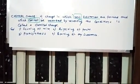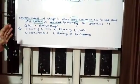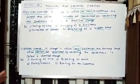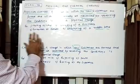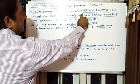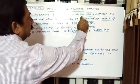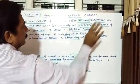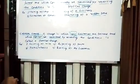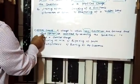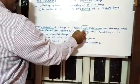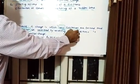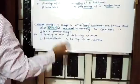If you go through the definitions carefully, you will come to know that in physical changes there are no new substances, whereas in chemical changes there are always new substances. In chemical changes, you will always get new substances and the change cannot be reversed.